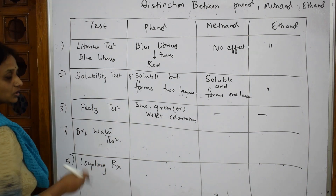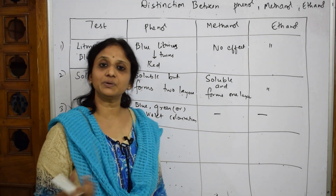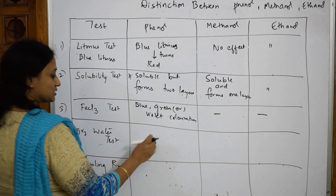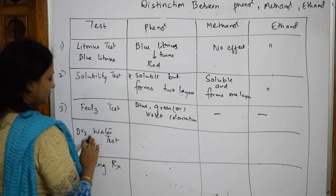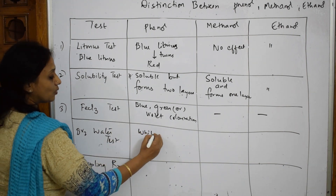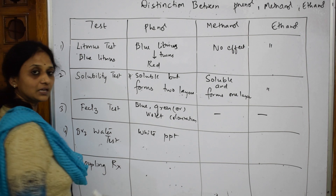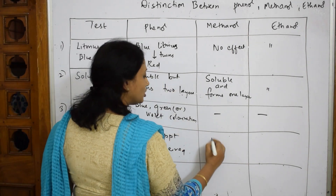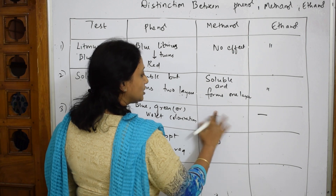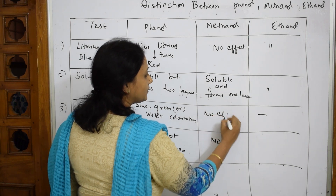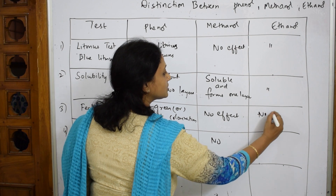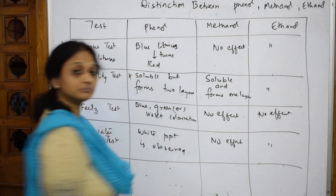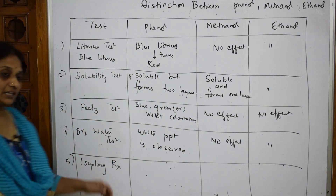For methanol and ethanol with neutral FeCl₃, there is no effect — write 'no effect observed,' not a dash. For the bromine water test: take a small amount of the given sample and add bromine water. For phenol, a white precipitate is observed. For methanol and ethanol, no effect — write 'no effect' here also.